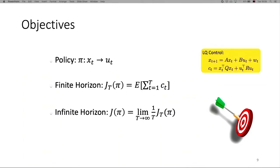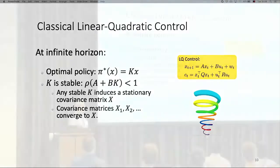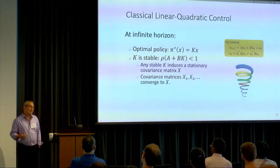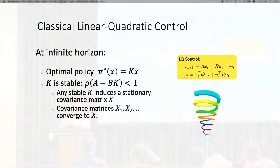What is a policy? A policy is a mapping from states to actions — a mapping from a d-dimensional vector space to a k-dimensional vector space. We're interested in both finite horizon and infinite horizon. In the finite horizon, we look at the sum of costs for T time steps; in the infinite horizon, we look at the average cost, assuming this limit exists, which it normally does under mild conditions. In the infinite horizon, it's like a steady state of the system. Since the dynamics are linear and the cost is quadratic, the optimal policy is also linear: there exists a matrix K such that the optimal policy is K times x.